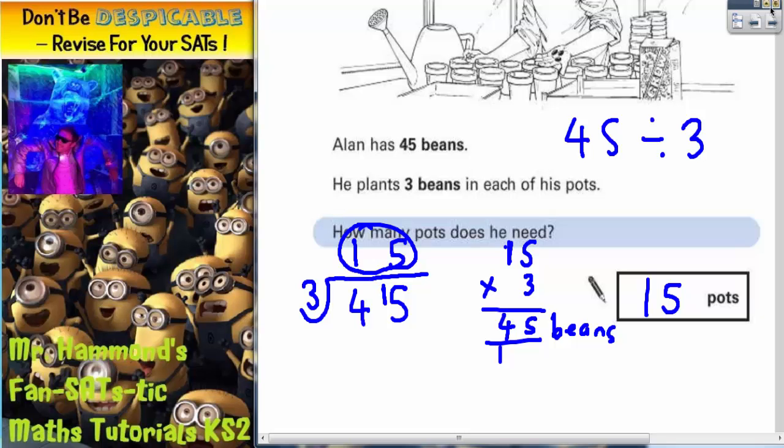The other way we could have done this question would be to start with 3. Then count up in 3s: 3, 6, 9, 12, 15, 18, 21, 24, 27, 30, 33, 36, 39, 42, 45.